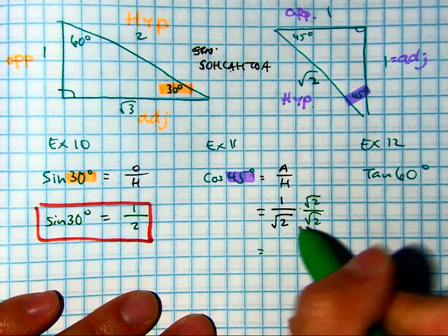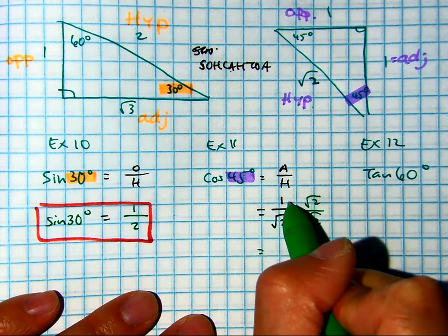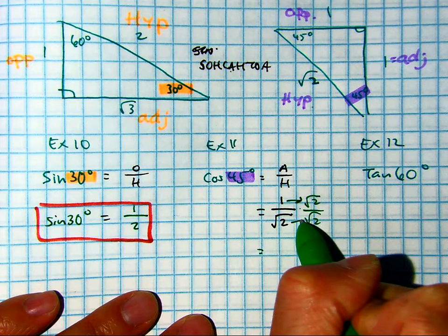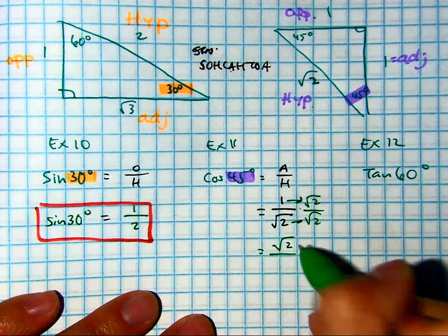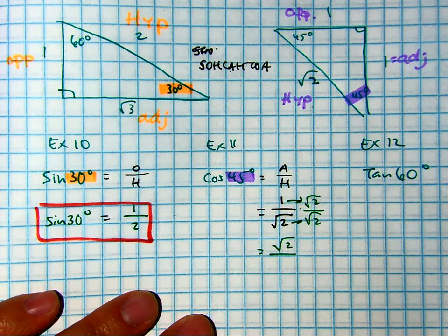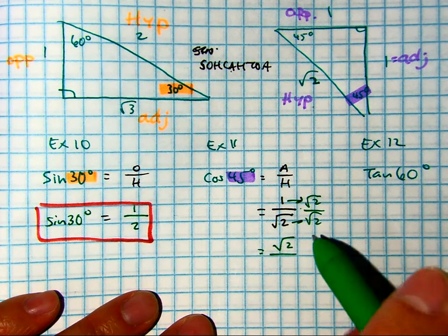So if you multiply across. Class, one times radical two. And radical two times radical two is? And radical four is? Two. Cosine of 45 degrees is radical two over two.